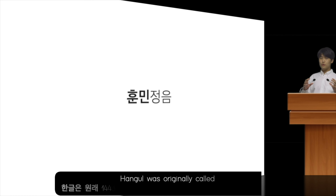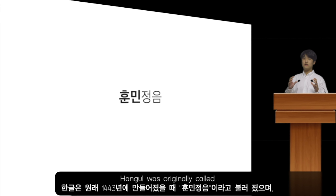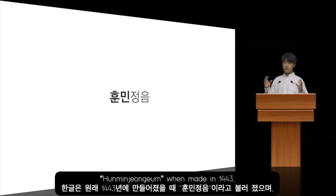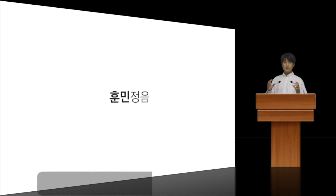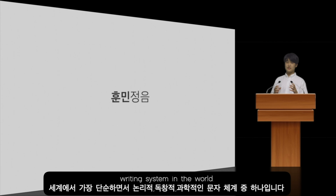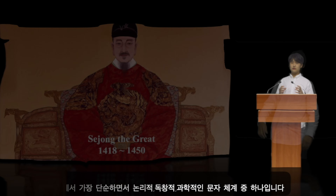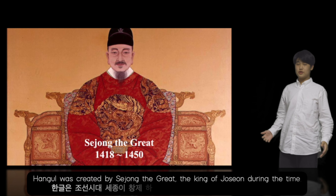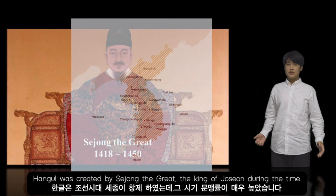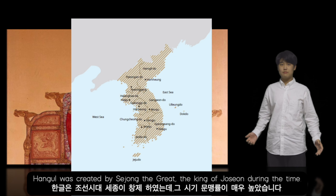Hangeul was originally called Hung Min Jung when made in 1443. It is one of the simplest, most logical, most ingenious, and most scientific writing systems in the world. Hangeul was created by Sejong the Great, the king of Joseon during the time.